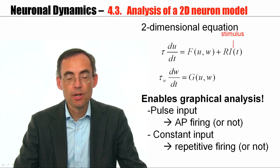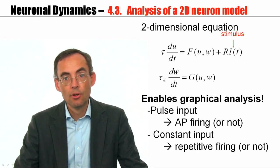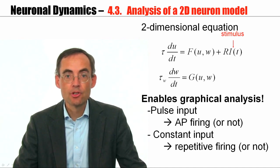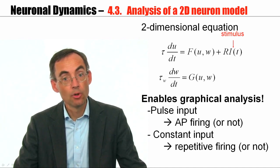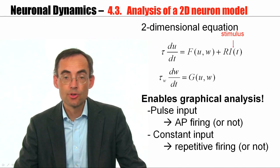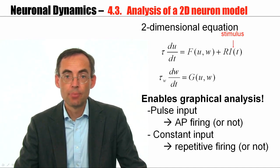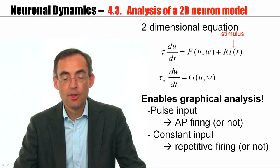For short-current pulses, we have found that if the pulse amplitude is small, then there's a return, potentially an oscillatory return, towards the rest. If the pulse amplitude is big, then the neuron model will generate an action potential, a huge excursion of the voltage.